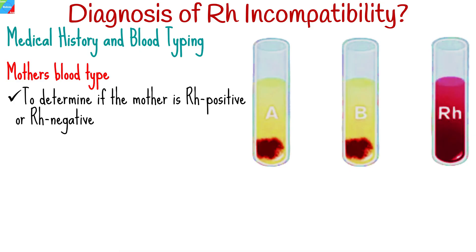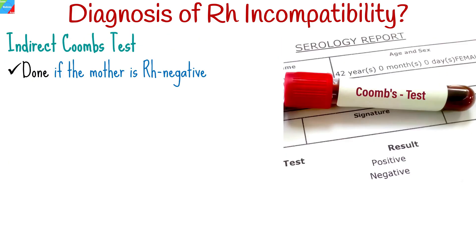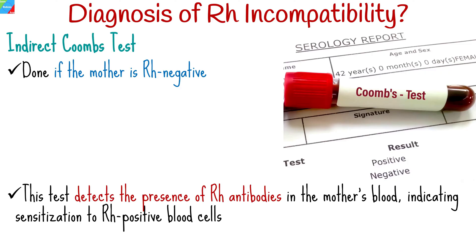Knowing the father's blood type is important, especially if he is Rh positive, as it helps determine the likelihood of the fetus being Rh positive, which can contribute to Rh incompatibility. If the mother is Rh negative, an indirect Coombs test may be performed. This test detects the presence of Rh antibodies in the mother's blood, indicating sensitization to Rh positive blood cells.